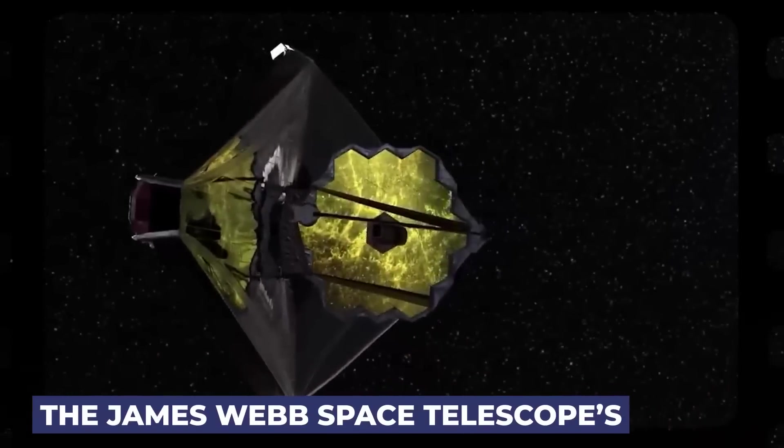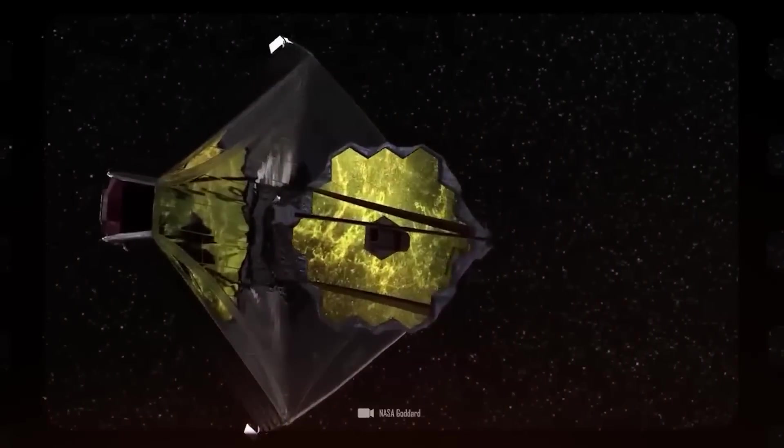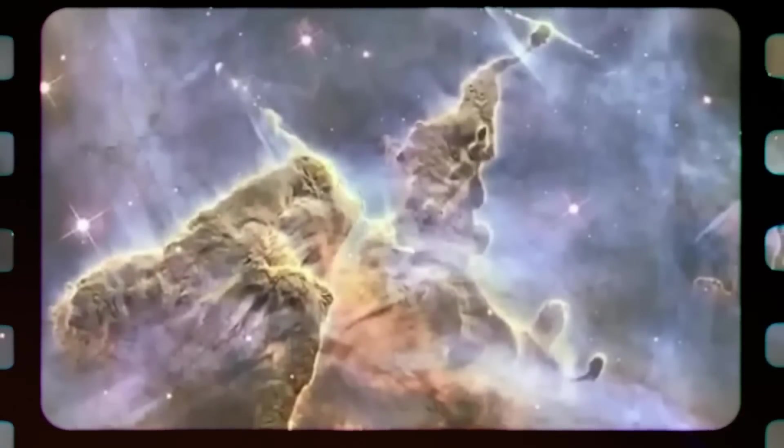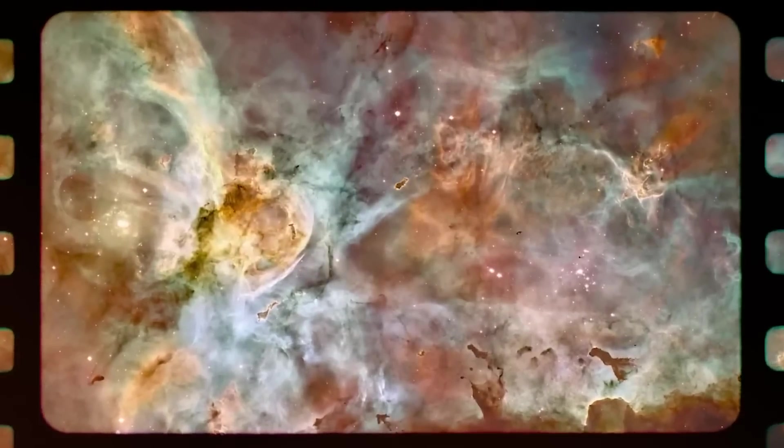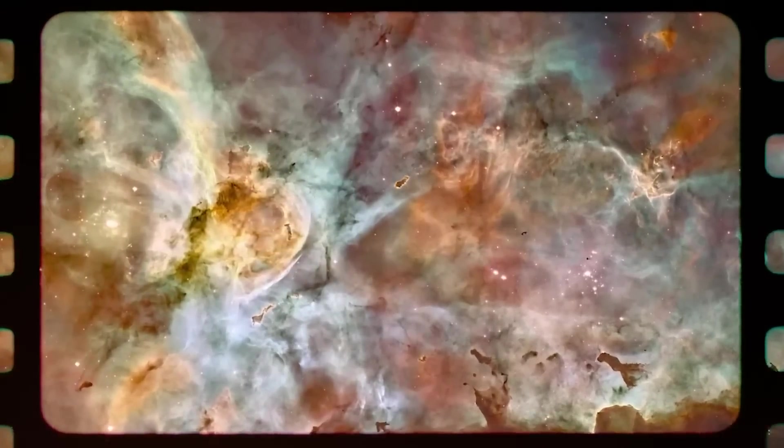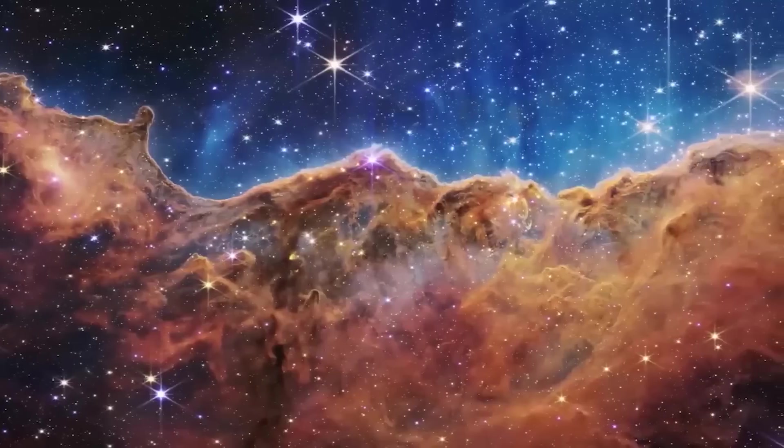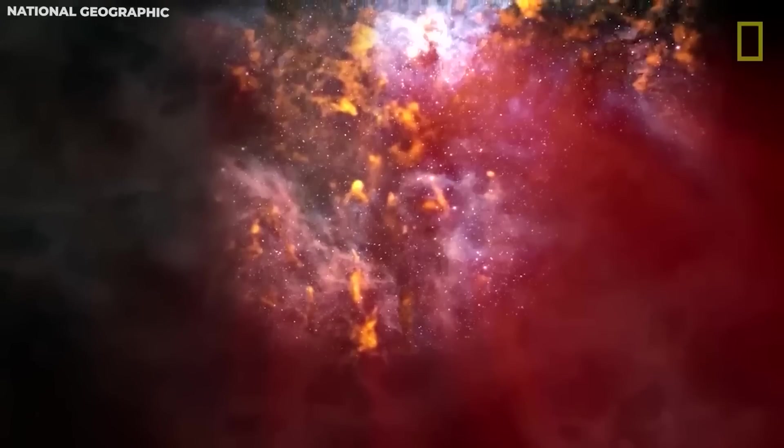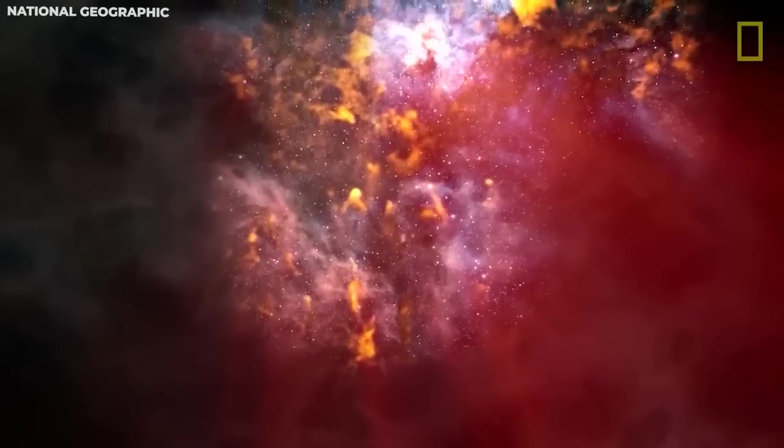Bill Nye further breaks down the Carina Nebula image, captured by the James Webb Space Telescope's near-infrared camera. The Carina Nebula is located about 7,500 light-years away from Earth. The nebula is located in an area known as the Cosmic Cliffs. The Cosmic Cliffs are like a nursery where young stars are born. Some of the stars created in this region are bigger than our solar system's sun.